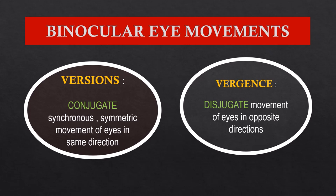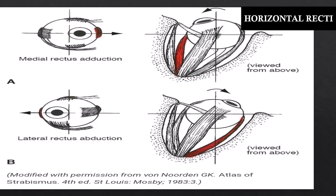Coming to the binocular eye movements, we have the versions and the vergences. Versions are the conjugate, synchronous, symmetric movement of the eyes in the same direction — both eyes moving in one single direction, either up, down, in, or out. Vergences are the disconjugate movements in which both eyes move in opposite directions. To understand vergences, we first need to understand the actions of the various extraocular muscles.